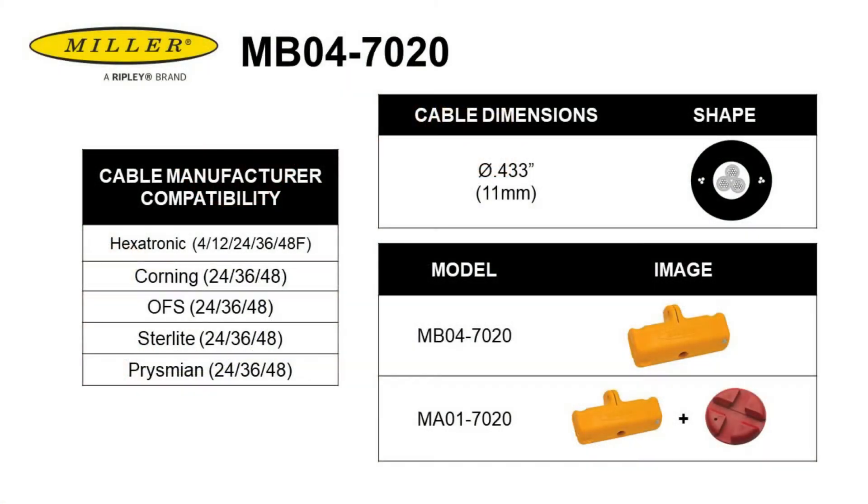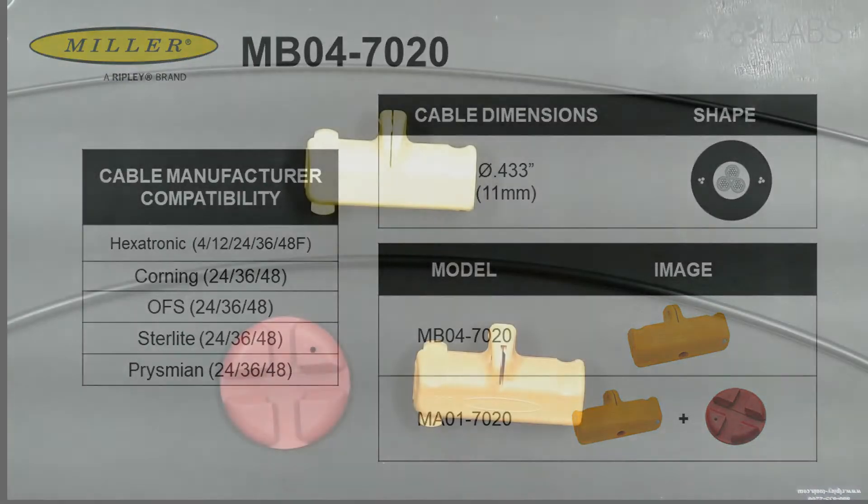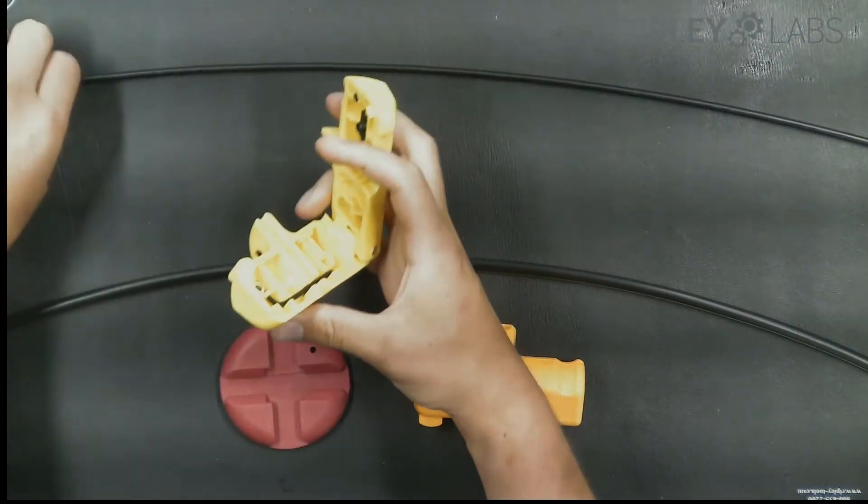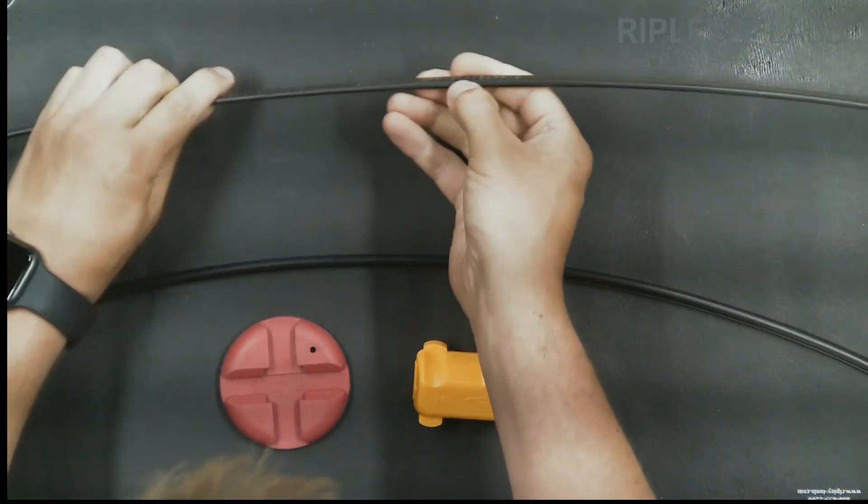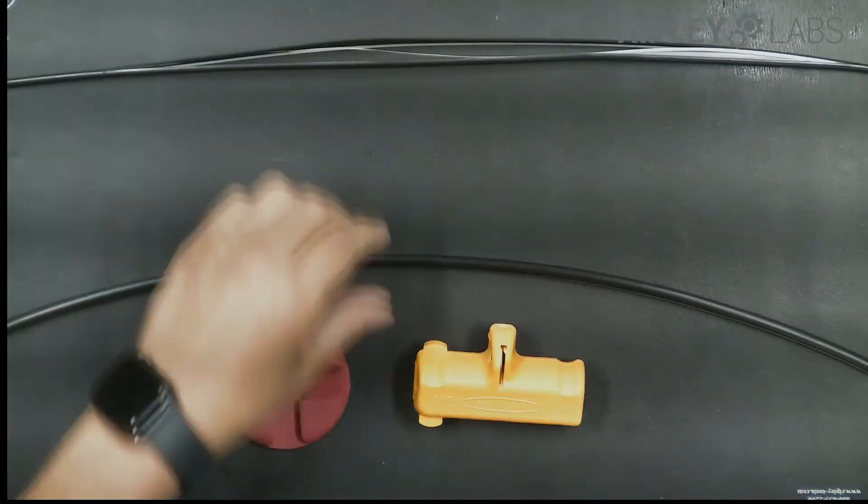The MBO4-7020 is compatible with the 11mm ultra-lightweight fiber cable. The tools allow mid-span access without disassembling the tool. The operation is the same whether you are end stripping or mid-spanning.